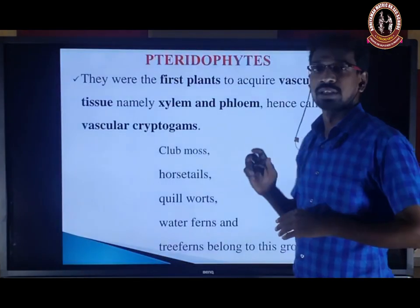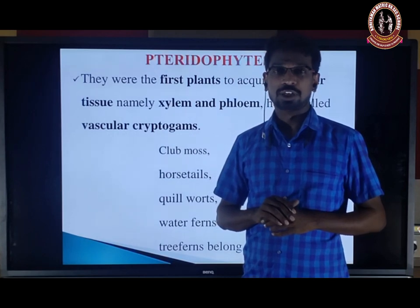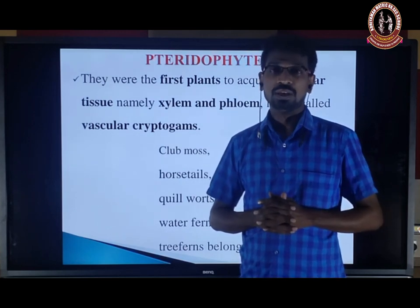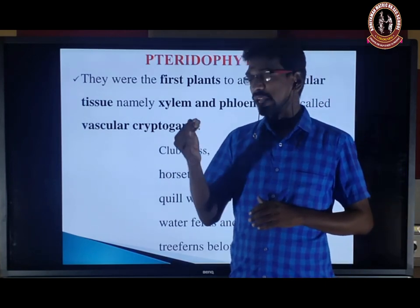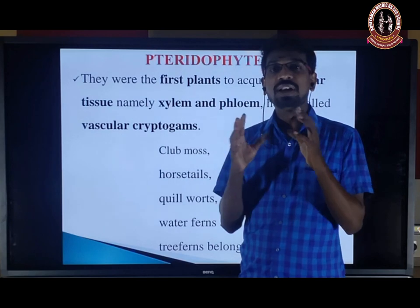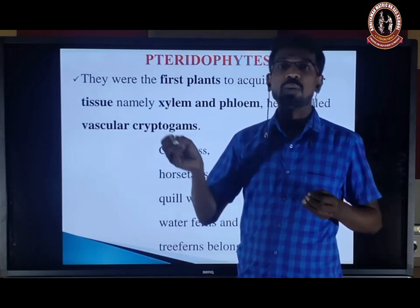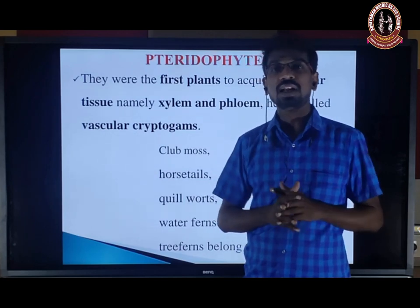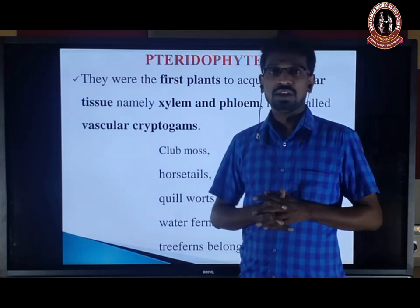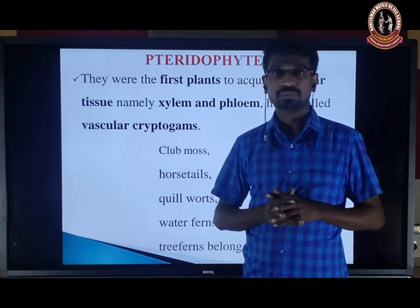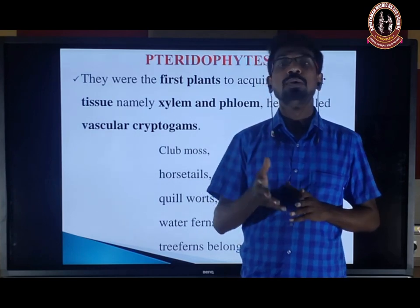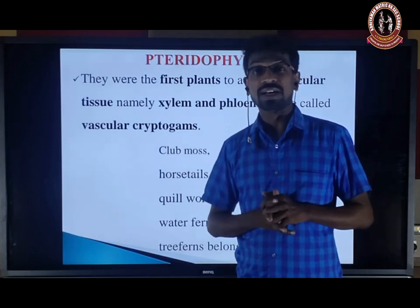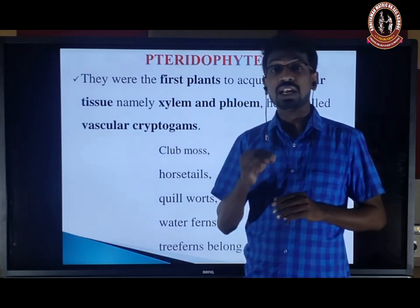Pteridophyta is a vascular cryptogamae, and it also comes under the Embryophyta. After zygote formation, the zygote undergoes repeated mitotic division from the embryonic stage, and the new sporophyte plant body is formed. This particular plant comes under the Embryophyta — a cryptogamae, non-flowering, non-seeded plant. Pteridophyta is a spore-producing plant, not seed-producing.